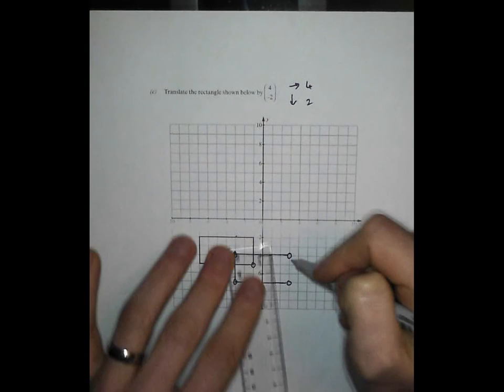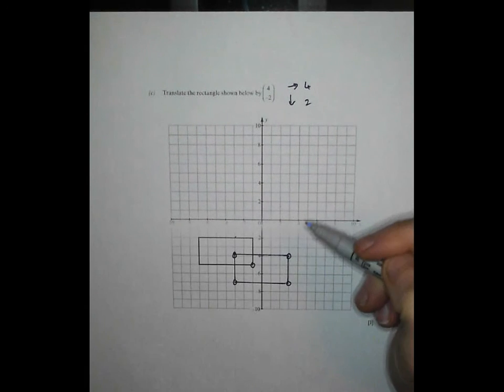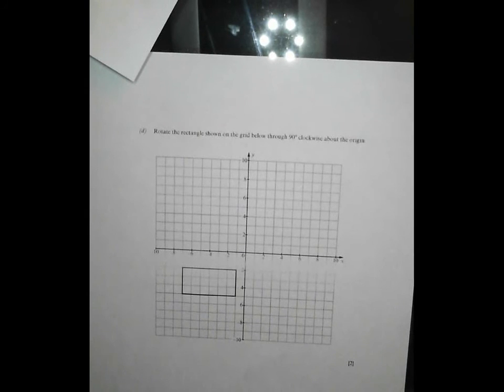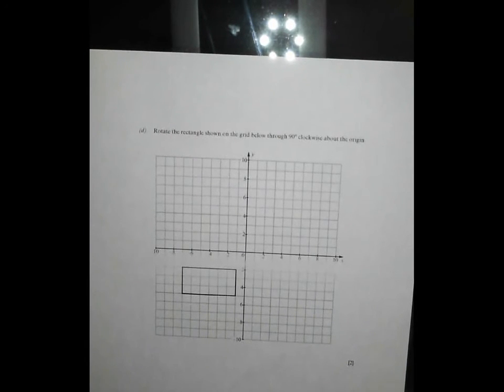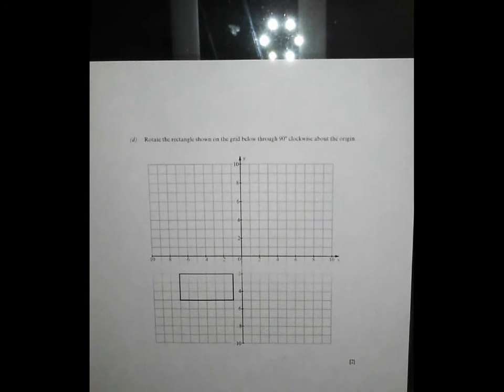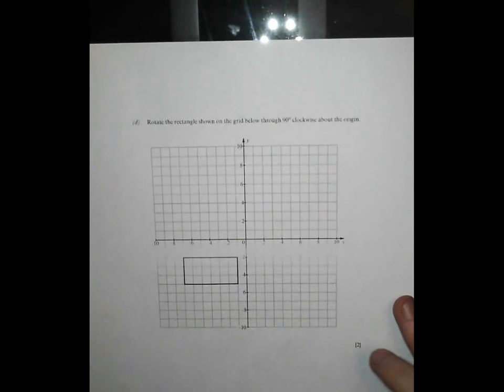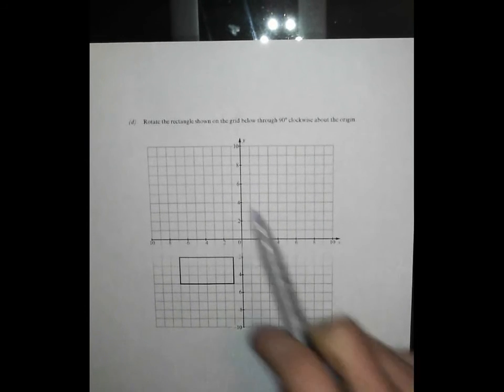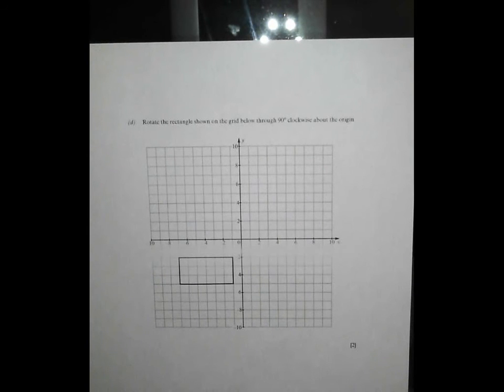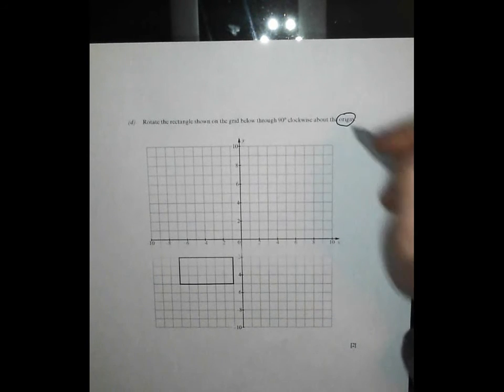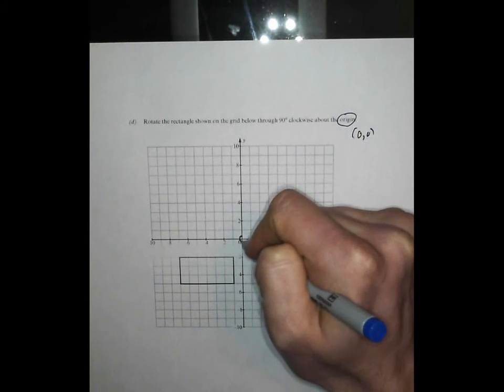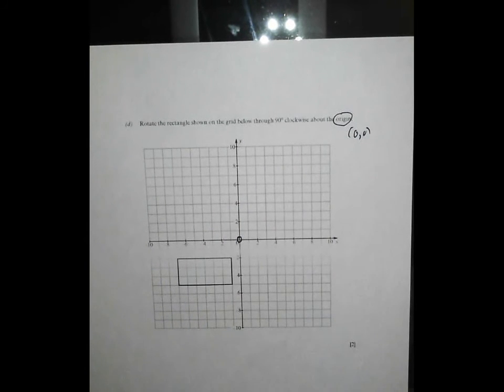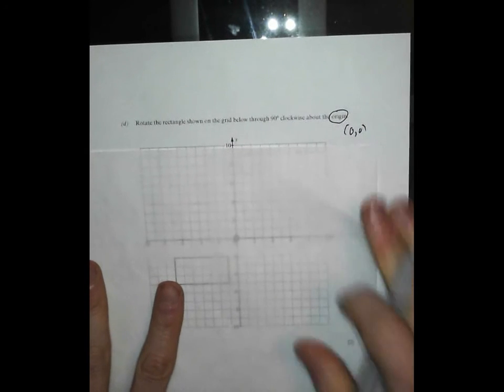So we come to our fourth and final bit and there can only be one type of transformation that this is. It's the one we haven't had. It is a bit of rotation. Now, some people are a bit freakish in the way that they can picture rotations without tracing paper. I'm not one of those people. I always need tracing paper. So let's use some tracing paper now. Rotate the rectangle shown on the grid through 90 degrees clockwise about the origin. The origin. That is the point zero, zero. First things first. Let's get that marked on. Now, to rotate, you're going to need to trace round your shape. So here we go. Got a nice bit of tracing paper here. Trace round my shape. I should be using a ruler, but no, don't tell anybody.